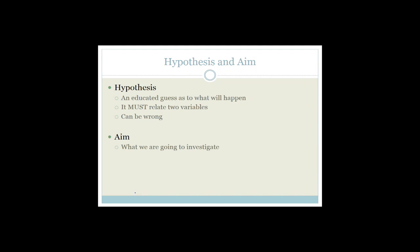An aim is what we are going to investigate. So in this case, it would be: 'I'm going to investigate the growth of a plant.' There are two types of data that the aim is going to refer to. Your aim just tells me what I'm going to investigate — there's no guessing, no suggestion of what the answer will be. But you can have an incorrect aim if you write the wrong thing being investigated.